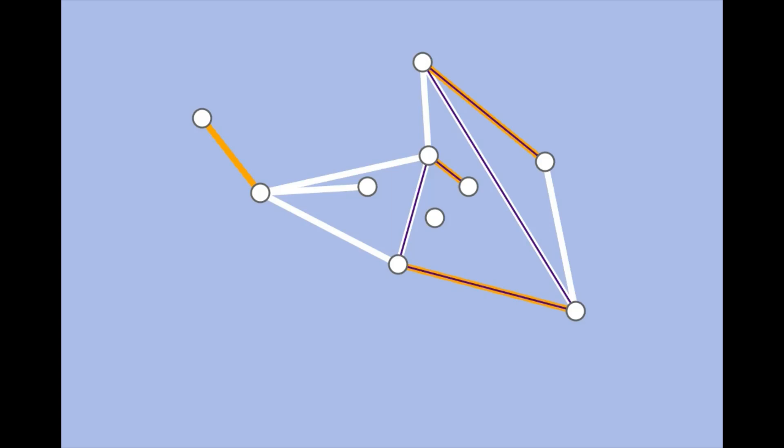Therefore, an alternating path which starts and ends at an unmatched vertex is called an augmenting path, because you can use it to augment the matching, that is, make it bigger, using this flipping procedure.